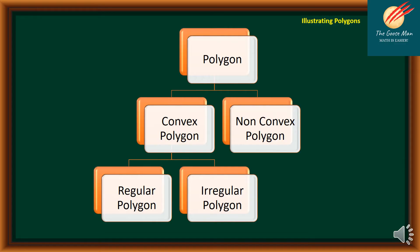Here is the diagram of our discussion. Polygons can be classified either as convex polygon or non-convex polygon. On the other hand, convex polygons can be considered as regular polygon or irregular polygon.